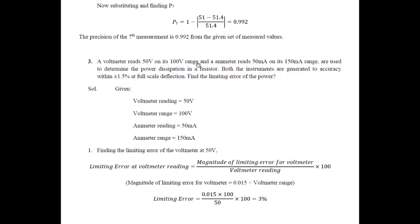We'll proceed towards the third problem. A voltmeter reads 50 volts on its 100-volt range and an ammeter reads 50 milliamps on its 150 milliamp range and are used to determine the power dissipation of a resistor. Both instruments are guaranteed to accuracy within plus or minus 1.5 percent at full scale deflection. Find the limiting error of the power.